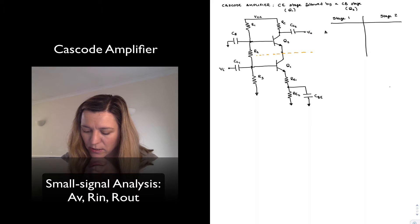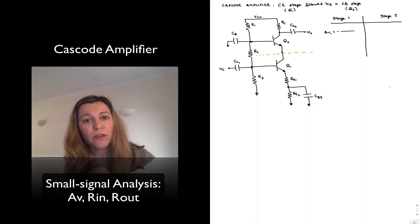So I can calculate AV1, the small signal voltage gain for the first stage, will be equal to negative. And this is going to be the overall resistance connected to the collector of Q1 divided by the overall resistance connected to the emitter of Q1.